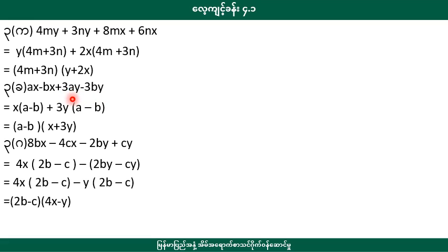ex minus bx plus 3y minus 3by. ex minus bx minus 2x plus 2x plus y. ex minus bx minus 3by. So the point here is e minus b. The other part is e minus b.